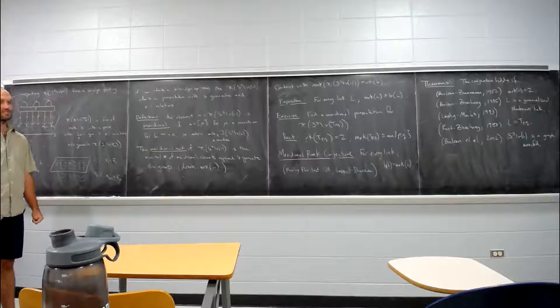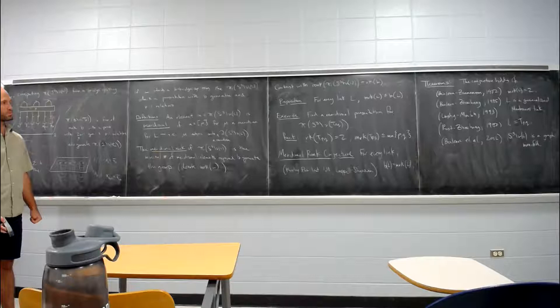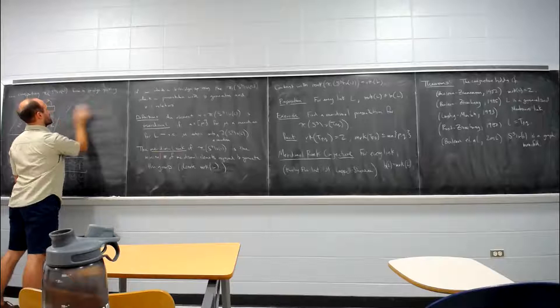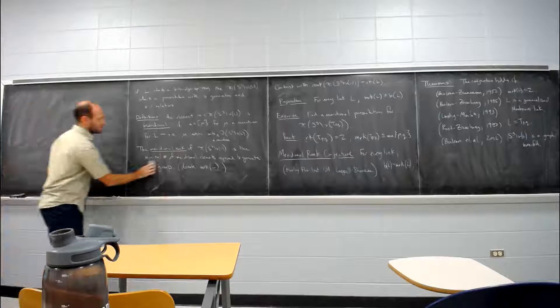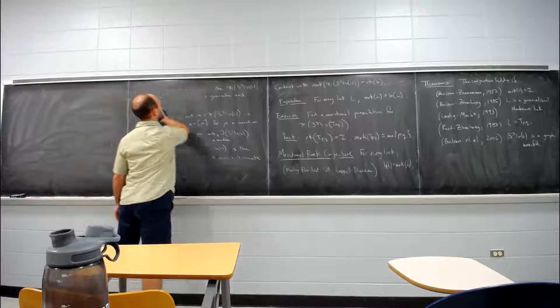So there's a rank genus conjecture for Heegaard splitting which is sort of an upstairs equivalent of this, and that actually ends up being false. So maybe that's good evidence that this conjecture's false. Any questions? So if that piques your interest let me know and we can talk a little more about the details of some of those papers. But that essentially concludes what I wanted to say about bridge splittings of knots and links.